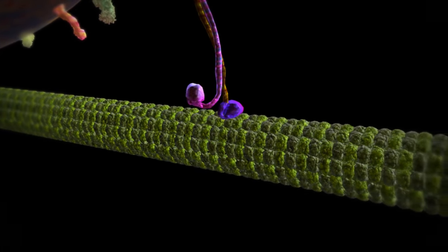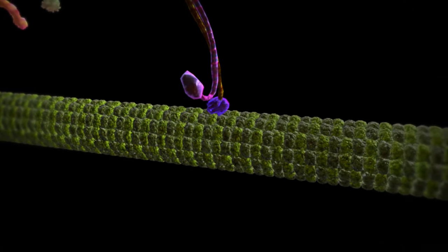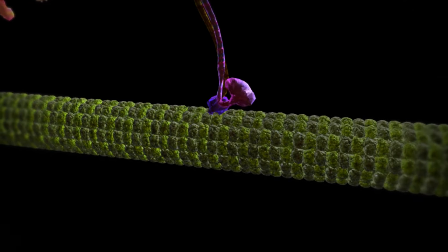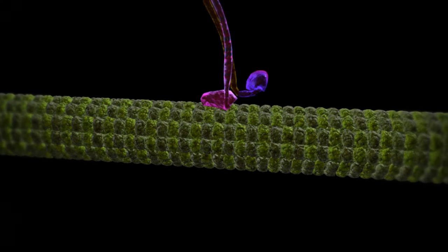Known as the workhorses of the cell, kinesins have two feet, or globular heads, that literally walk one foot over another along the microtubule, pulling their cargo to its destination.